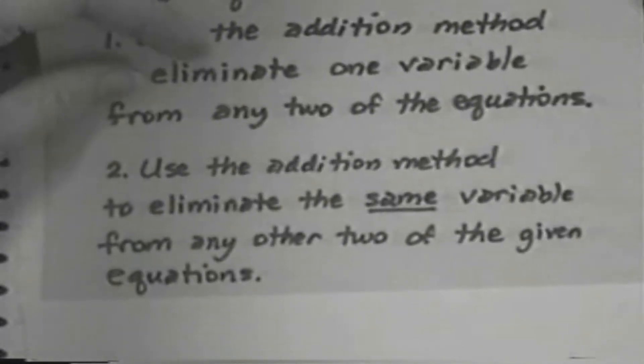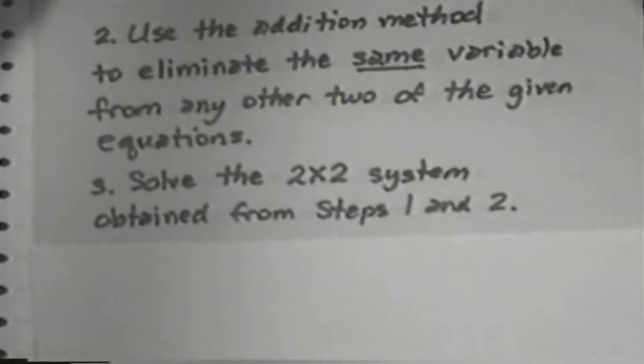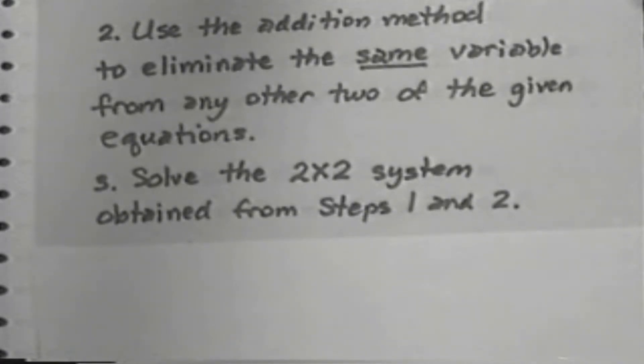This gets us to Step 3, which is solve the 2x2 system obtained from Steps 1 and 2. How have we got a 2x2 system now? From Step 1, we eliminated a variable, maybe x. From two of the equations, that leaves the other letters, maybe y and z.